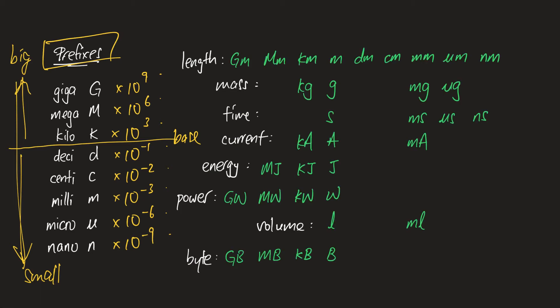On the right here, we have some common examples of physical quantity and their respective units. For example, length: you have gigameter, megameter, kilometer, and so on. And of course decimeter—you seldom see it, but you can actually use the prefix deci for length also.